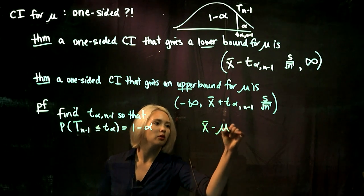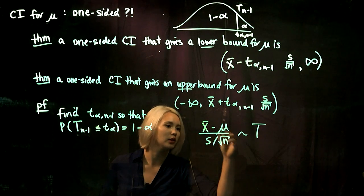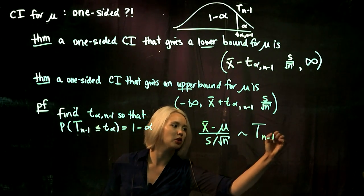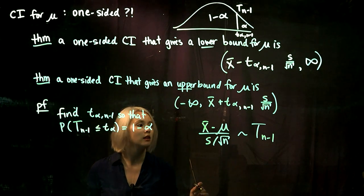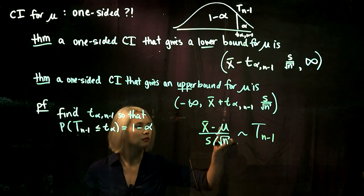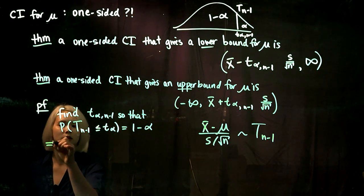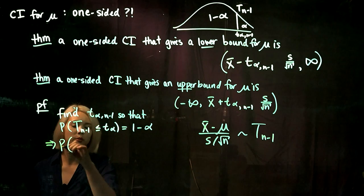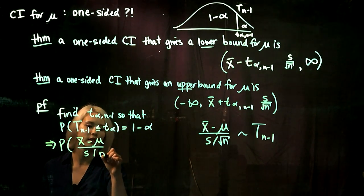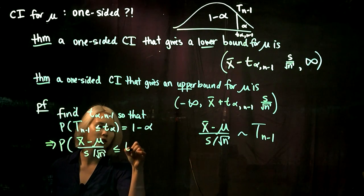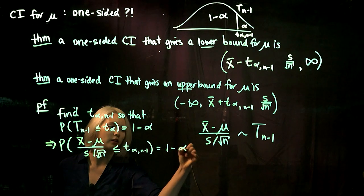Now we substitute x-bar minus mu divided by s over root n for our t, because we know this quantity has a t-distribution with n minus 1 degrees of freedom — as discussed in the last couple of videos. So we write the probability that x-bar minus mu over s divided by root n is less than or equal to t_alpha with n minus 1 equals one minus alpha.